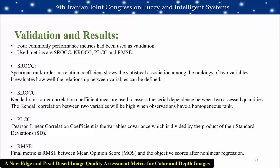Four common performance metrics were used for validation: SROCC (Spearman rank order correlation coefficient), which shows statistical aggregation between rankings of two variables; KROCC (Kendall rank order correlation coefficient), which measures serial dependency between two quantities — higher when observations have homogeneous rank; PLCC (Pearson linear correlation coefficient), which is the variable covariance divided by the product of standard deviations; and RMSE, which measures the difference between the mean opinion score and the objective score of nonlinear regression results.